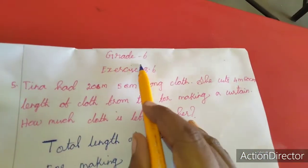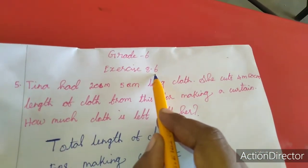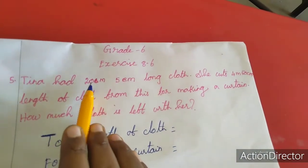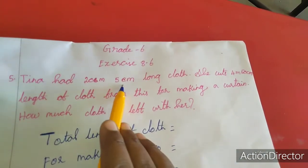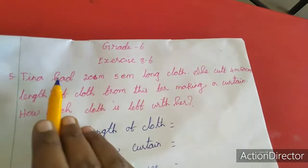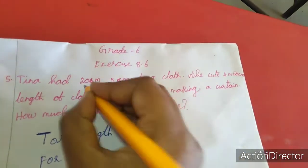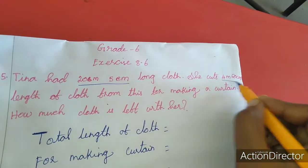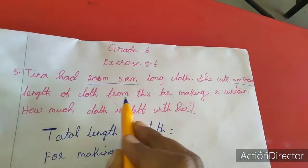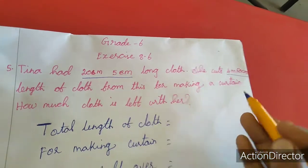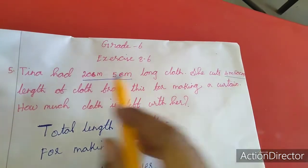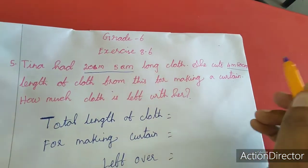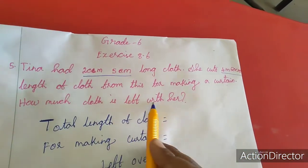Hi, in last class we completed exercise 8.6 up to 4 sums. Now we will move to the 5th sum. Tina had 20 meter 5 centimeter long cloth. She cuts 4 meter 50 centimeter length of cloth from this for making a curtain. How much cloth is left?